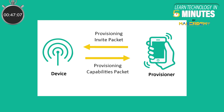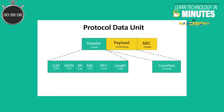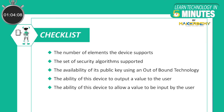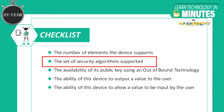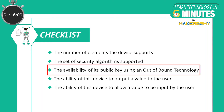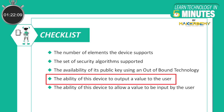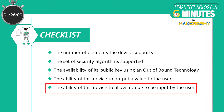Step 2: Invitation. When the provisioner discovers the unprovisioned device via the beacons that were sent, it sends an invitation to this unprovisioned device. This uses a new type of PDU — also known as protocol data unit — introduced in BLE Mesh, called the provisioning invite PDU. The unprovisioned device then responds with information about its capabilities in provisioning, which includes: 1) the number of elements the device supports; 2) the set of security algorithms supported; 3) the availability of its public key using an out-of-band technology; 4) the ability of this device to output a value to the user; and 5) the ability of this device to allow a value to be input by the user.